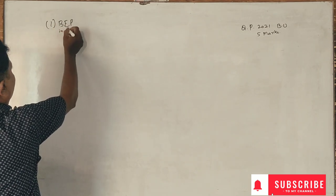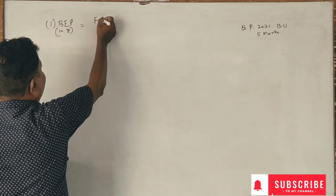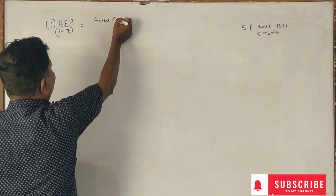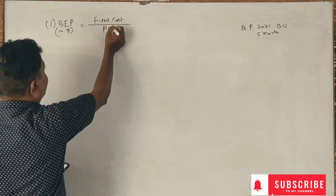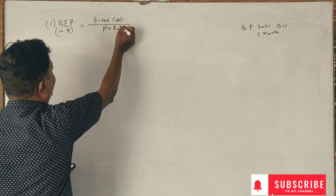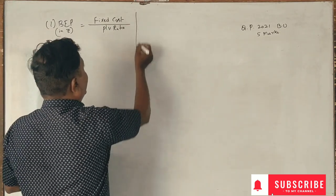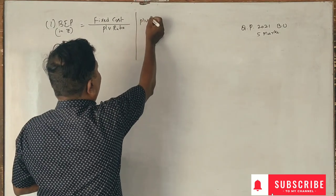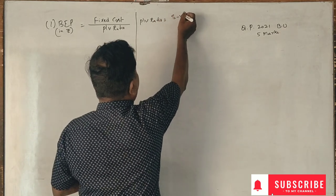In rupees, it is fixed costs divided by PV ratio. And PV ratio is equal to sales minus variable cost divided by sales into 100.